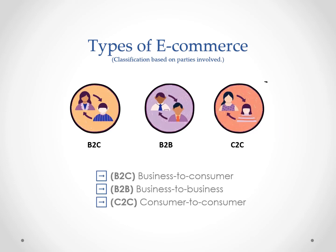The first type of classification is based on who are the parties involved in the business transaction. This gives us different types of e-commerce: B2C (business to customer), B2B (business to business), and C2C (consumer to consumer). We will go through each one and look at well-known e-businesses that adopt each classification.